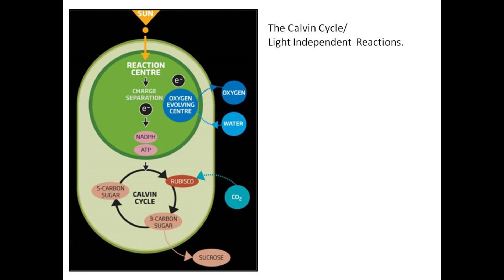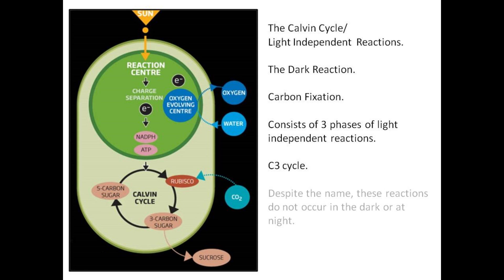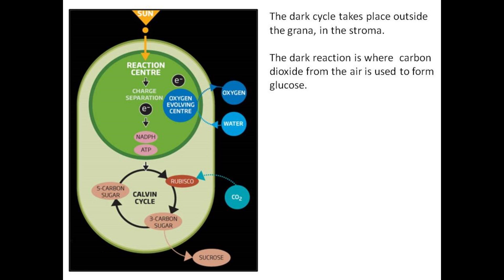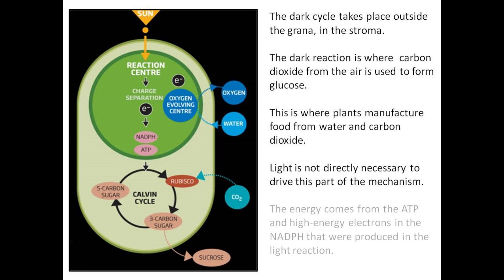The Calvin cycle, also called the light-independent reactions or dark reaction, involves carbon fixation and consists of three phases. Despite the name, these reactions do not occur only in the dark or at night. The dark cycle takes place outside the grana, in the stroma, where carbon dioxide from the air is used to form glucose. Light is not directly necessary; the energy comes from ATP and high-energy electrons in the NADPH produced in the light reaction.